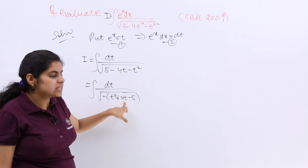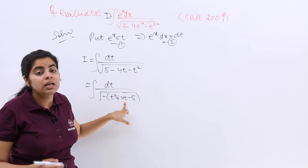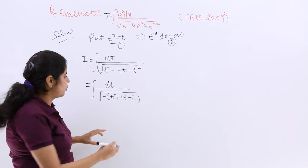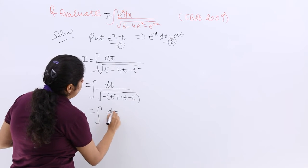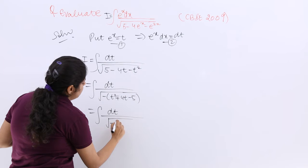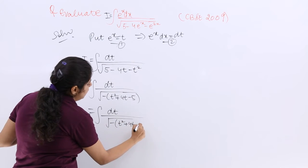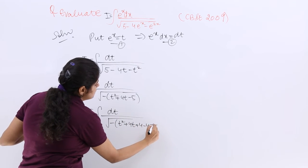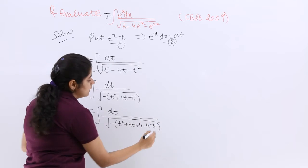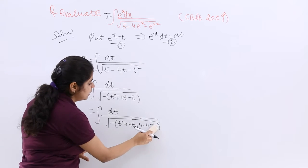Now 4's half is 2. Its square is again 4. So the same things to follow. dt upon under root minus t square plus 4t plus 4 minus 4 minus 5. This is minus 5. Let me make it more clear.